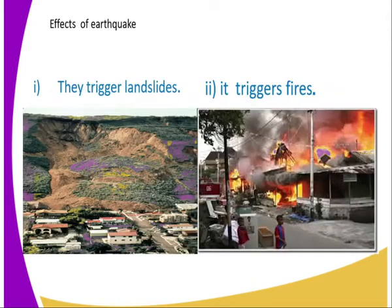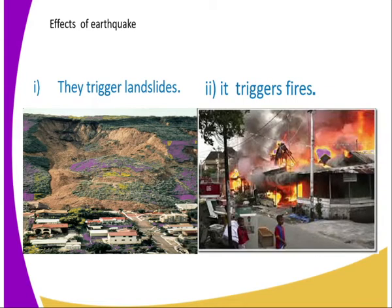Then we go now to the effects of the earthquake. Number one, it triggers landslides. As you can see, there is a landslide that has been caused by the earthquake, so landslides are triggered by the earthquake. Then number two, it triggers fire. There is a photograph of an area where fire started after experiencing the earthquake.